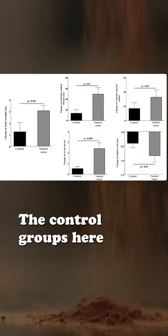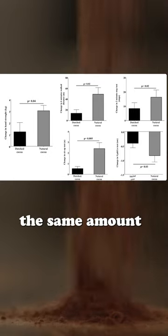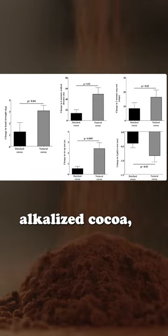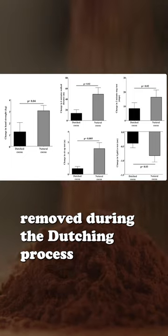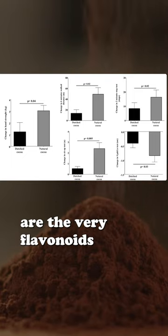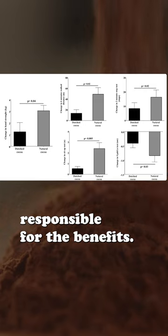Unfortunately, the tastiest cocoa did not work as well. The control groups here were just given the same amount of highly dutched cocoa, alkalized cocoa, where some of the bitter compounds removed during the dutching process are the very flavonoids responsible for the benefits.